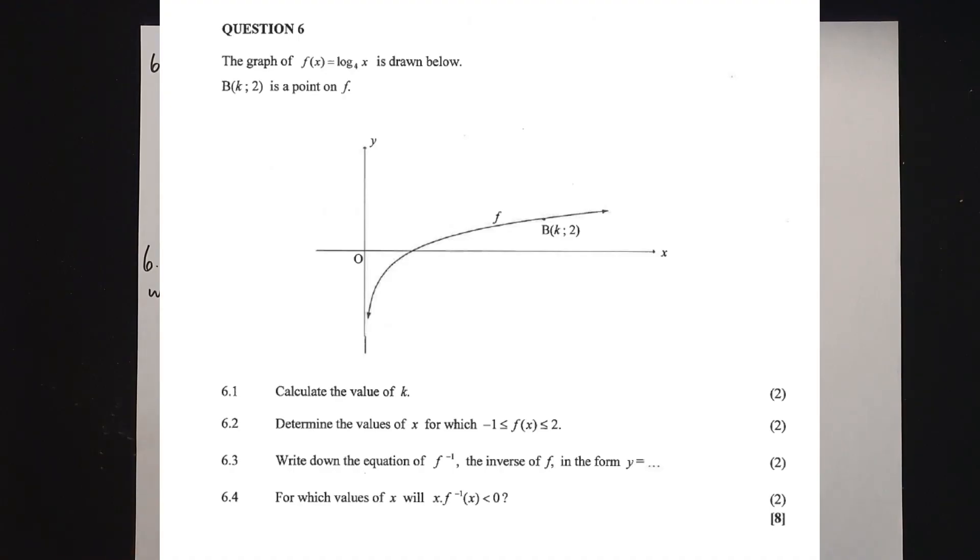Let's have a look at question 6. Question 6 is another function that we're dealing with. It says the graph of f(x) = log₄(x) is drawn below. They've given us point B, the coordinate where the x value is missing, and they've given us the y value of 2, and they tell us that it lies on the function.